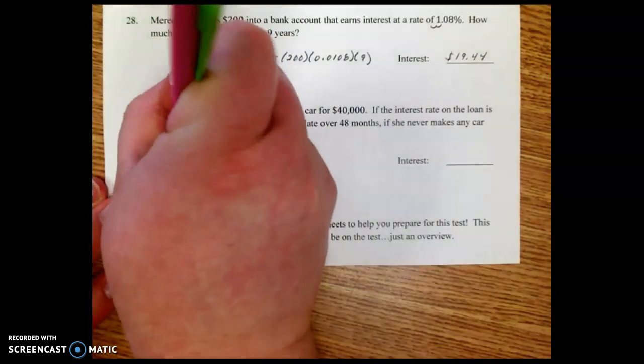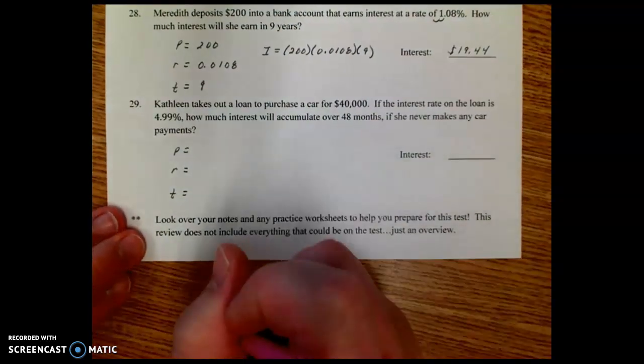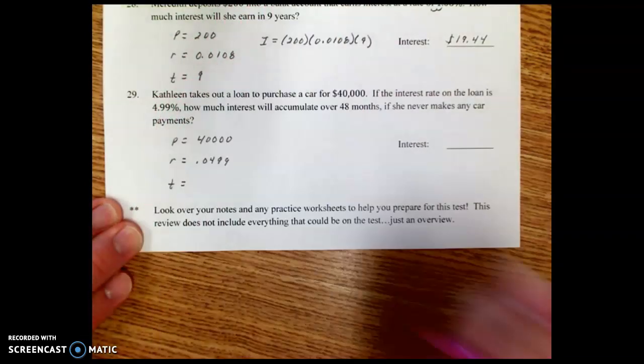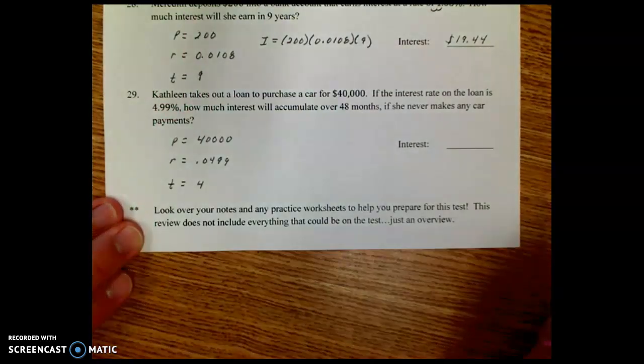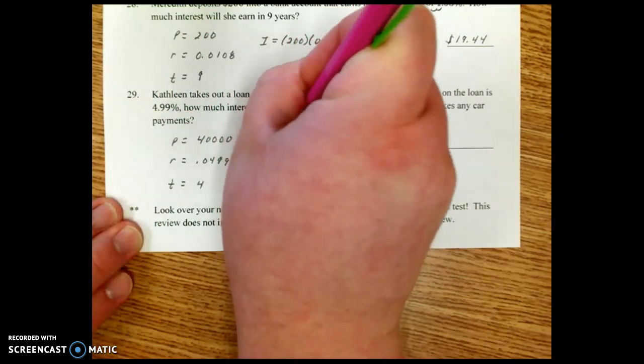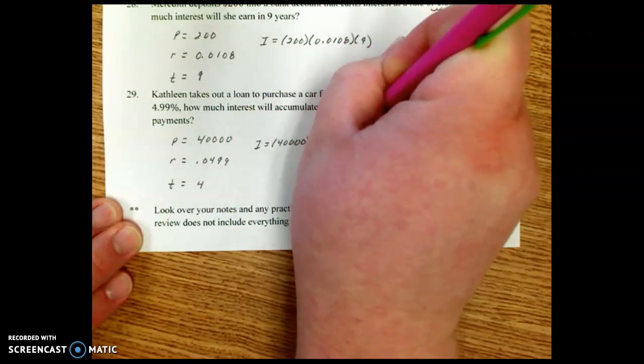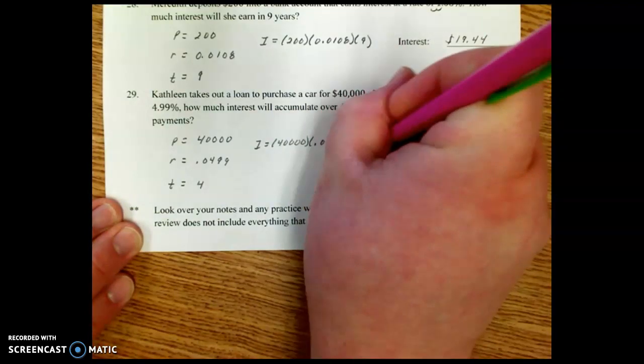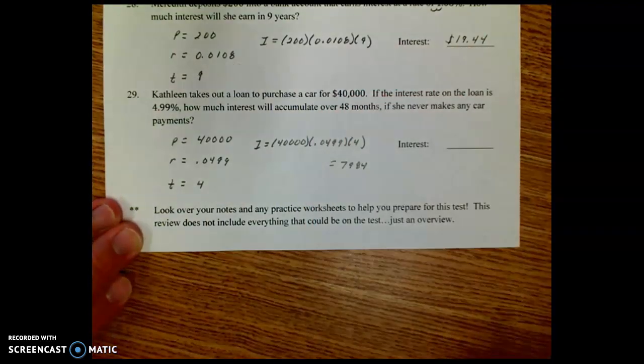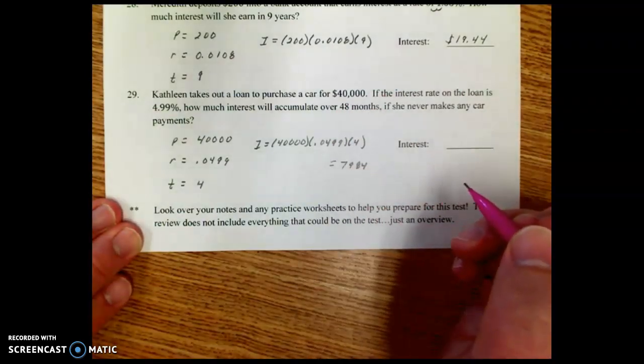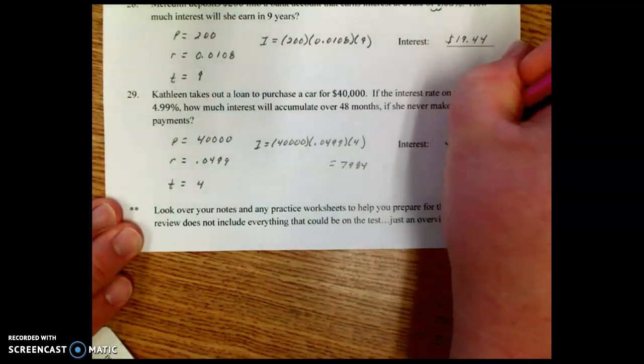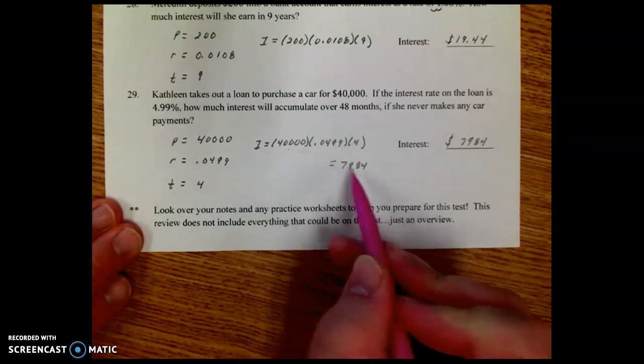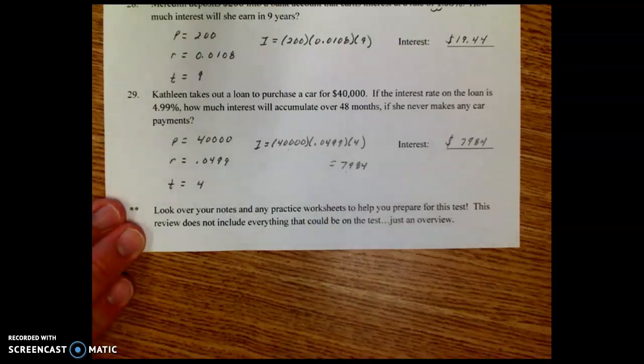The next one, we're going to do the same thing. P, R, T. The principal is $40,000. The rate is 0.0499 converted. 48 months, that's four years. And we're going to do now interest is $40,000 times 0.0499 times 4. That gives us $7,984 in interest. And then we need to add that to the original. Oh, it just says interest. So we don't need to add that to the original. It's $7,984. If I did ask you to find the overall total that she owed, you would add $40,000 to the $7,984. Good luck studying.